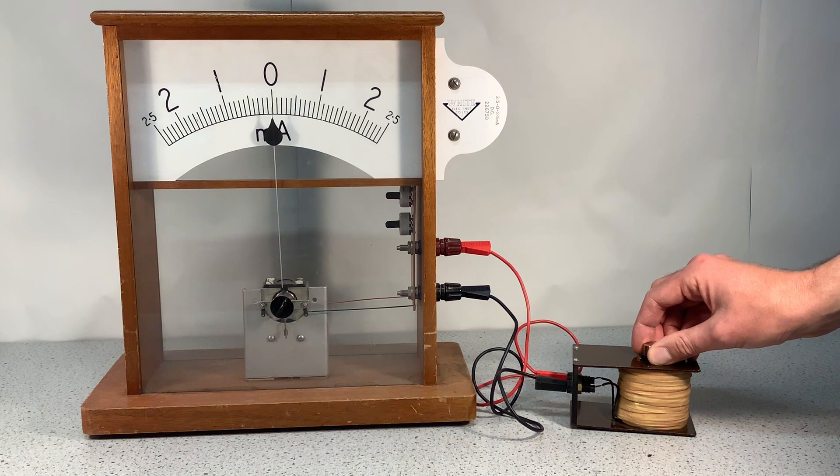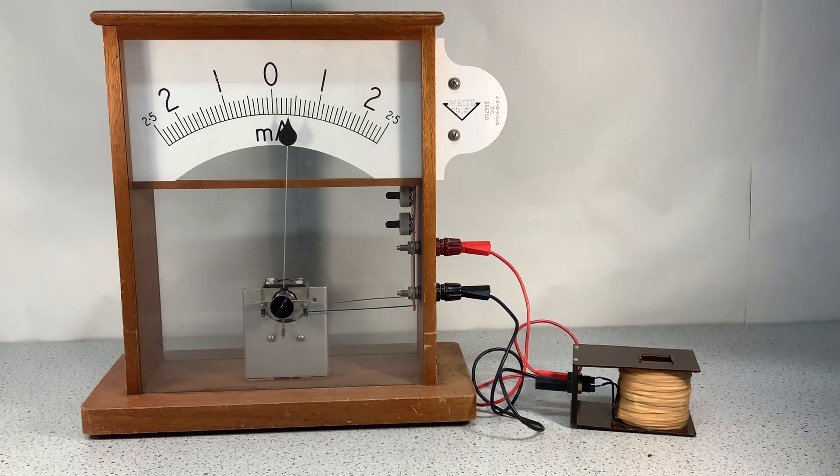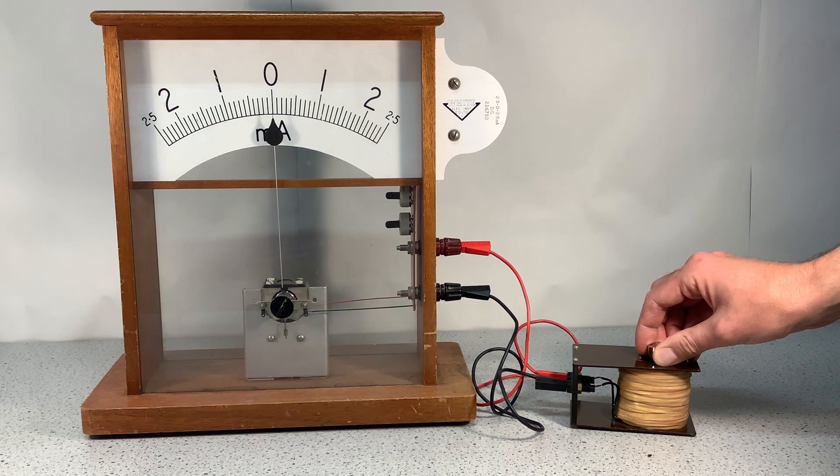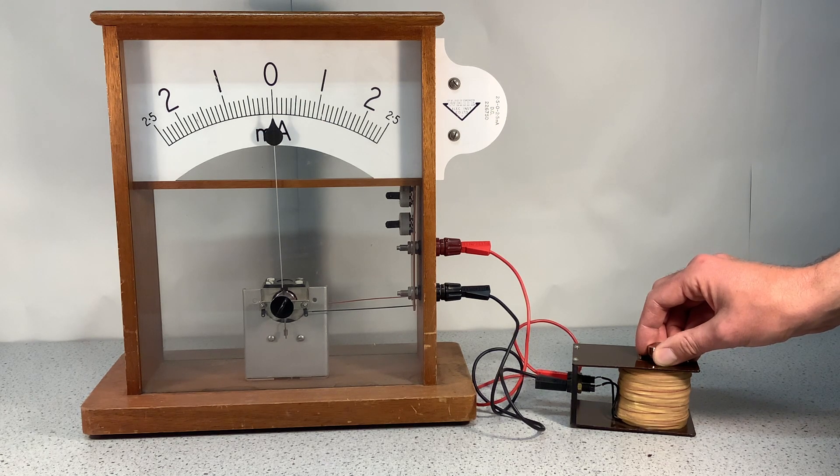So the two ways to change the direction of the induced potential difference is move the magnet in the opposite direction, or change it so that you are moving the opposite pole and keep moving the magnet in the same direction.